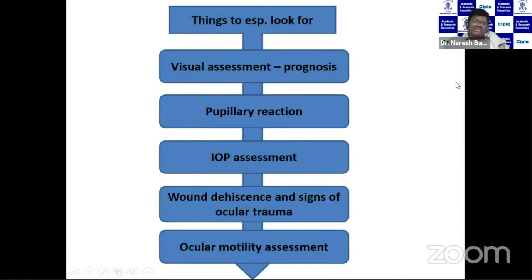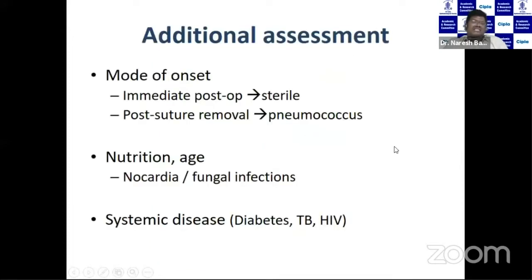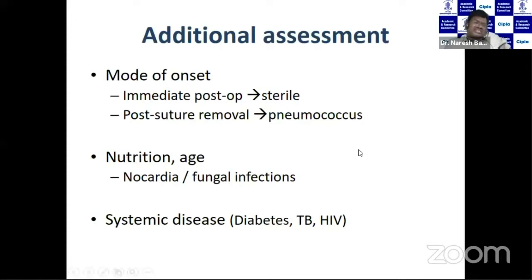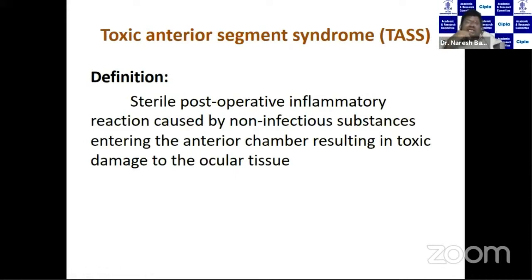Clinically, assess the vision because it is useful for prognosticating. Look for pupillary reaction, IOP, wound dehiscence, signs of ocular trauma, and postoperative bleb. Ocular motility should also be assessed. Consider when it happened — immediate post-op can be sterile, while post-thermal injury may suggest pneumococcus. Check nutritional status and age, as poorly nourished patients commonly present with Nocardia and fungal infections. Systemic diseases and immunocompromised states also predispose to endophthalmitis.